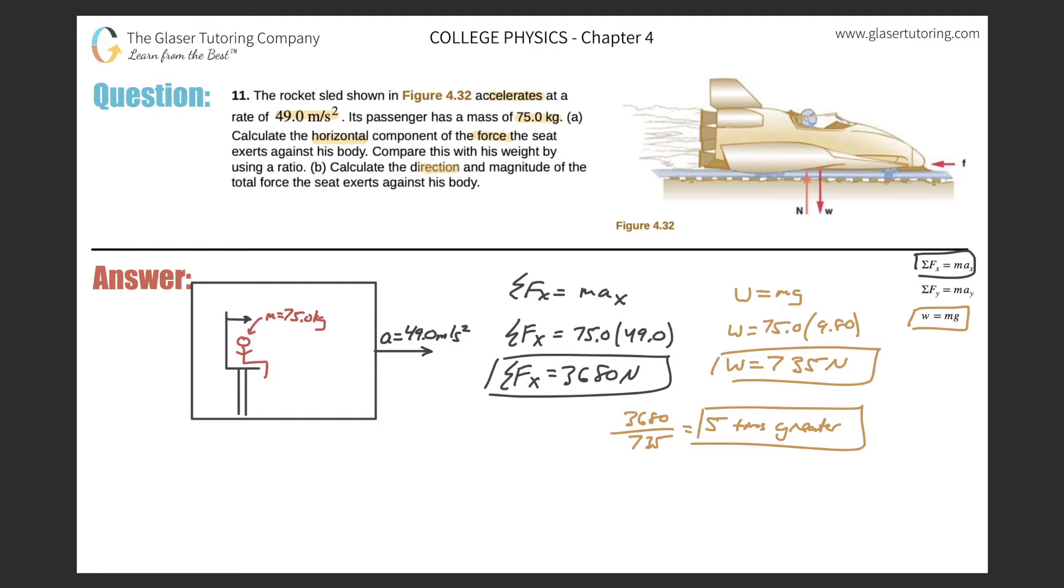It says calculate the direction and magnitude of the total force, aka the net force, aka the resultant force that the seat exerts against his body. So consider the seat. The seat is doing two things here.